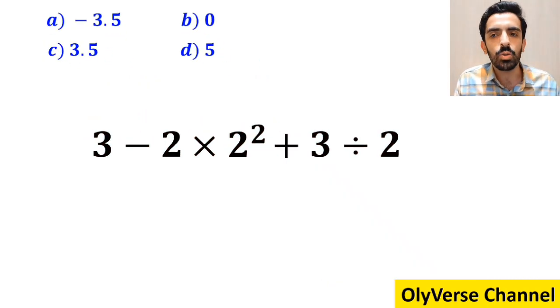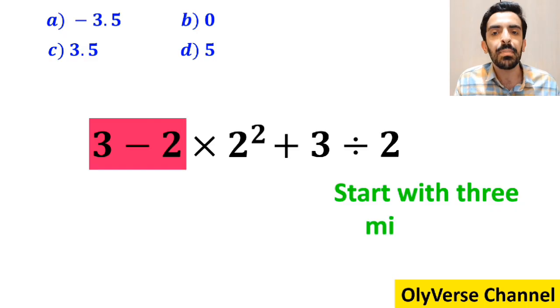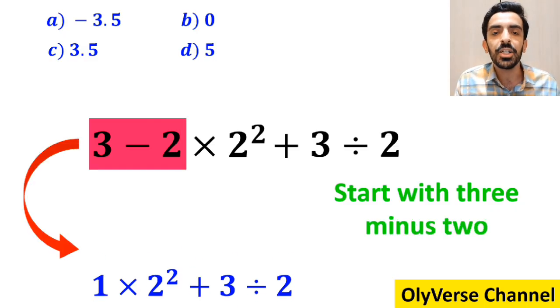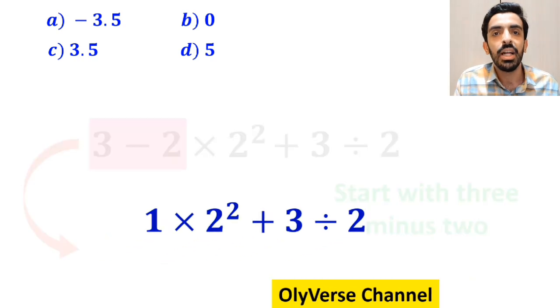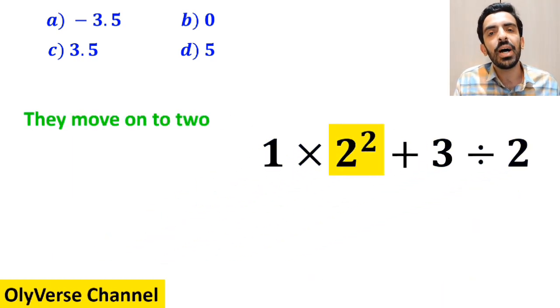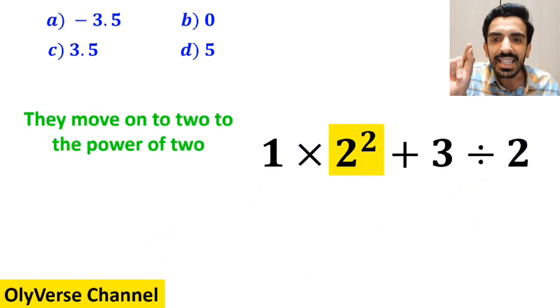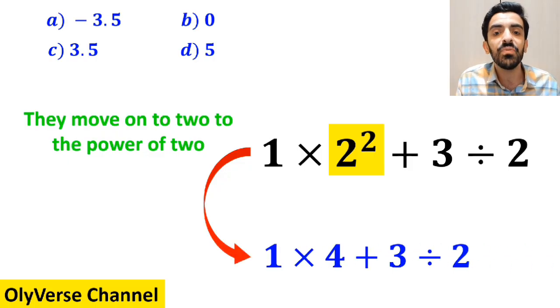Many people, when solving this question, start with 3 minus 2 and rewrite this expression as 1 multiplied by 2 squared plus 3 divided by 2. Then they move on to 2 to the power of 2, which I have highlighted in yellow, and replace this expression with 1 times 4 plus 3 divided by 2.